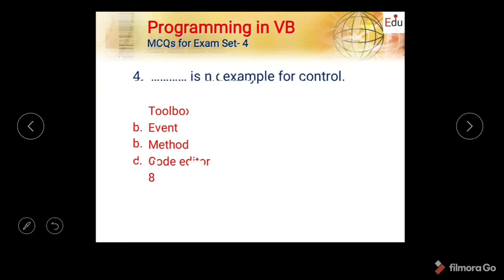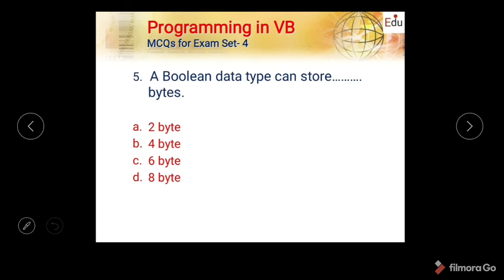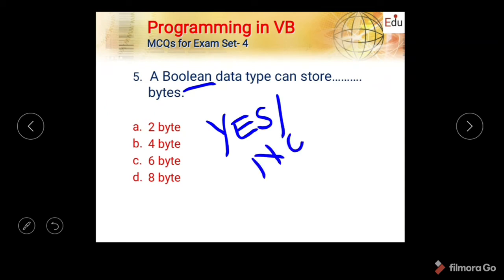Next question: A boolean data type can store dash bytes. Boolean means it accepts only yes/no or true/false values. Since one condition is true and another is false, it accepts one item, so it requires a minimum of two bytes. The remaining options are four, six, and eight, but the exact answer is two bytes.